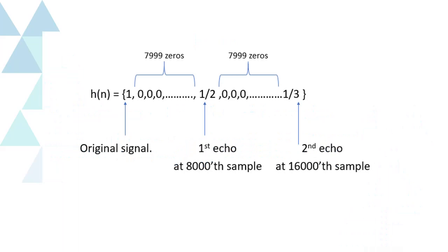So the impulse response will be h(n) = {1, 0,0,0,..., 1/2, 0,0,0,..., 1/3} with 7999 zeros between each value.